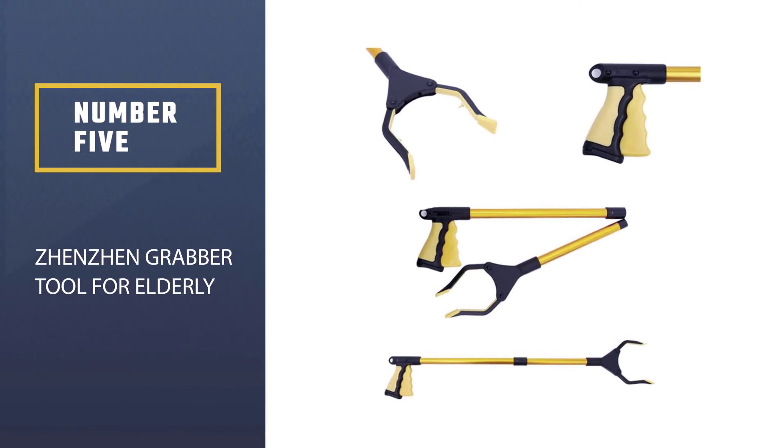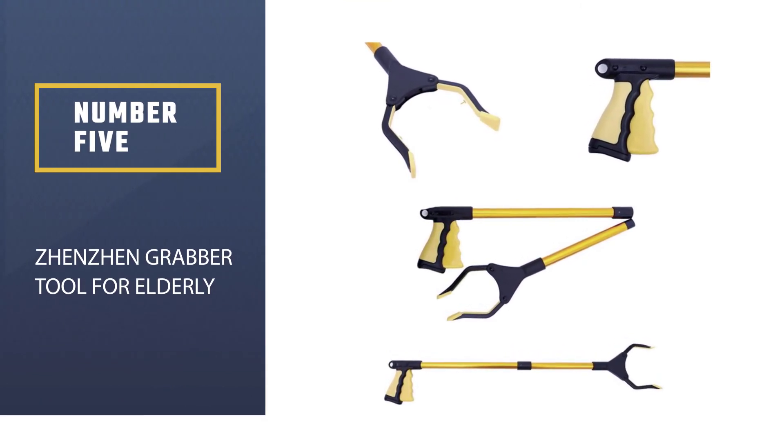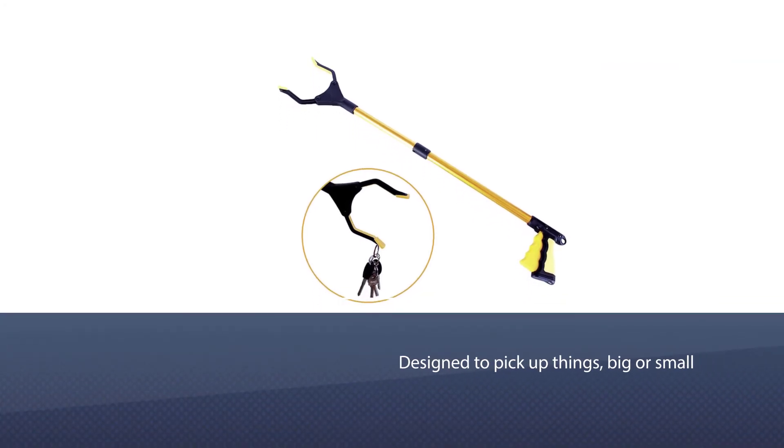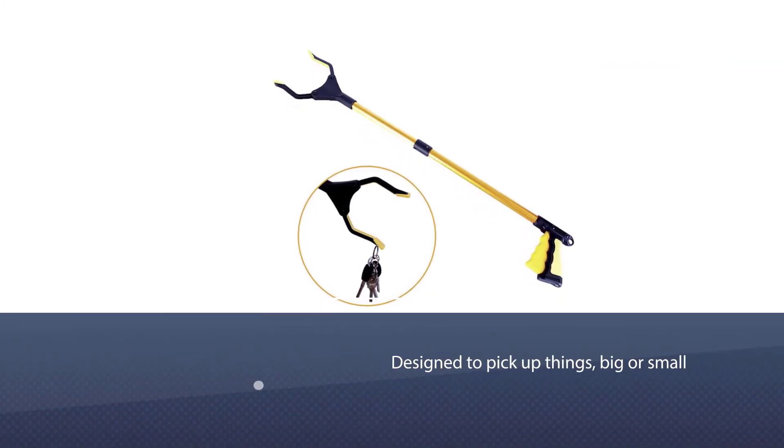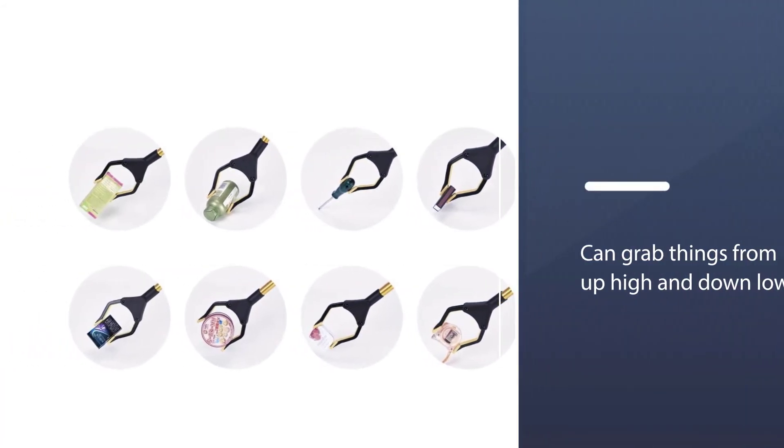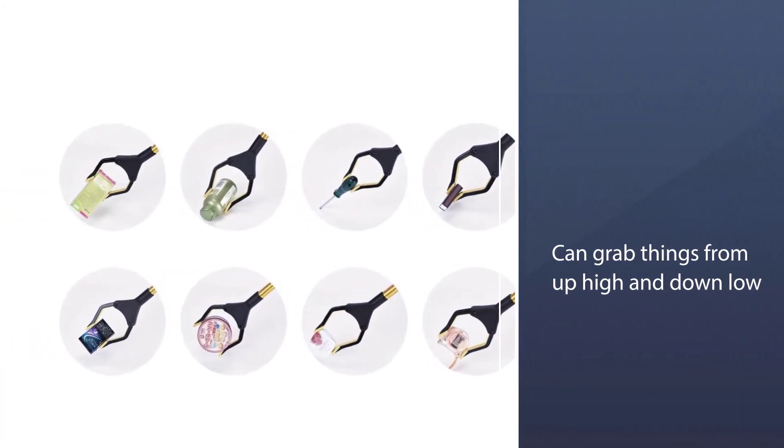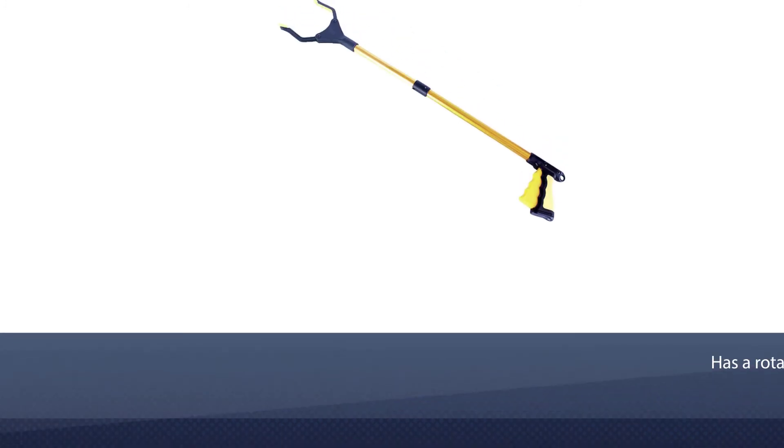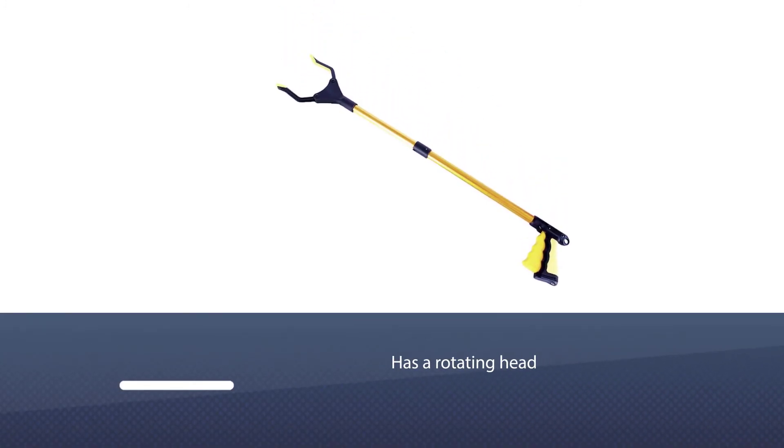Number five, zhenzhen Grabber Tool for Elderly. The zhenzhen grabber reacher tool is designed to pick up things big or small that are out of reach. It can grab things from up high and down low and it has a rotating head that lets you easily reach behind places to grab stuff.